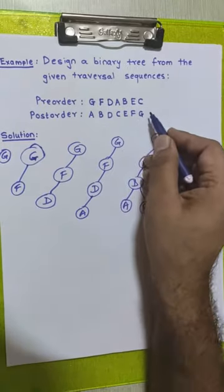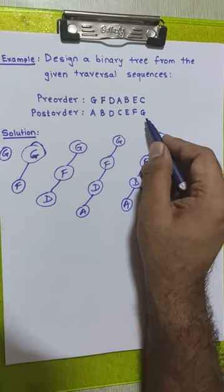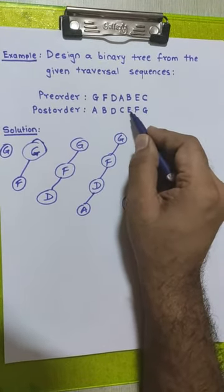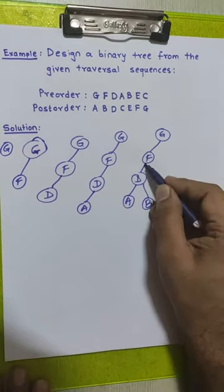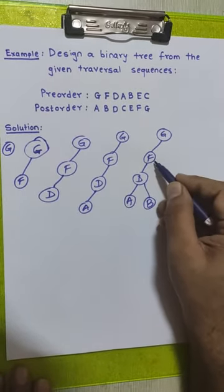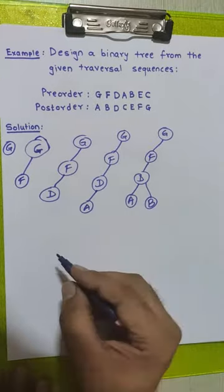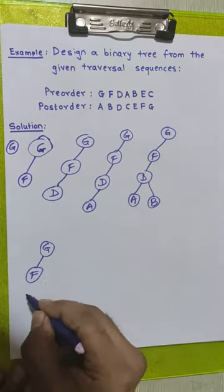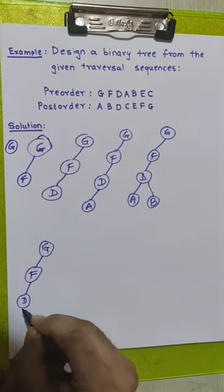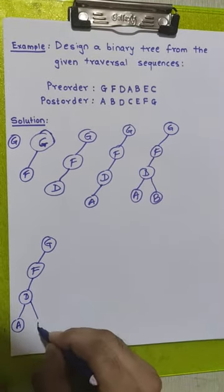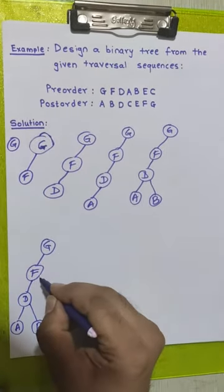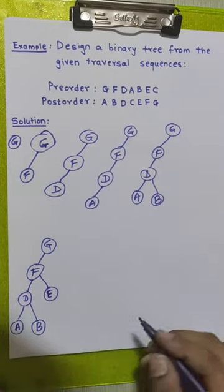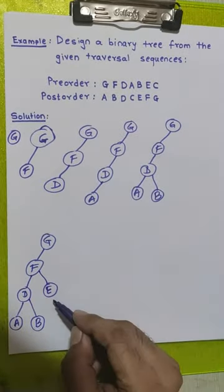After placing node B, we pick the next element from pre-order: node E. We check the post-order sequence — node E appears immediately before node F, meaning it is part of node F's subtree. The left child of node F is already occupied by node D, so we place node E to the right side of node F.